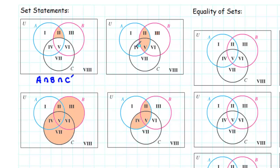Now compare that with our second Venn diagram, where we have regions 2 and 5 shaded in. Notice that this shaded region is where circles A and B overlap each other. This can simply be represented as A intersect B — the set of all women that are actresses and ballerinas.